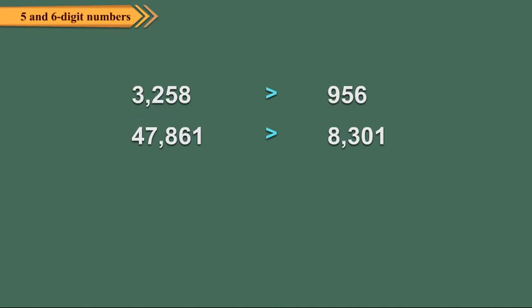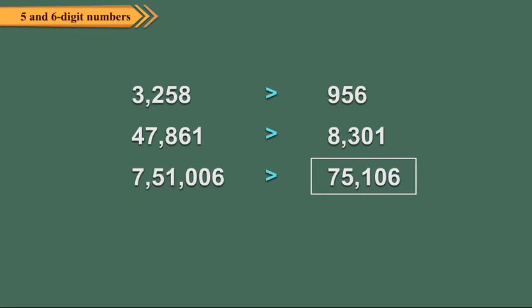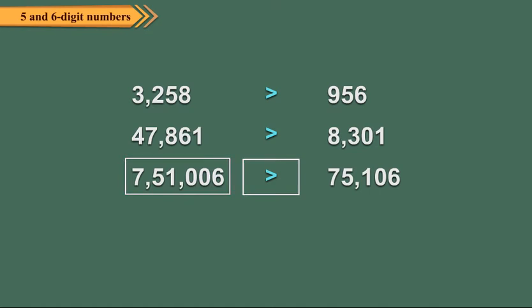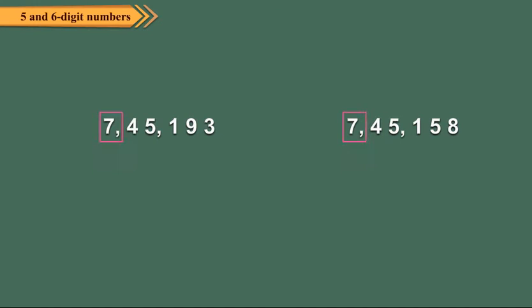47861 is greater than 8301 because it has 5 digits and 8301 has only 4 digits. Similarly, 751006 has 6 digits while 75106 has 5 digits, so 751006 is greater. When the numbers have an equal number of digits, we start comparing the leftmost digits. If they are equal, we compare the next digits and continue till we find unequal digits.